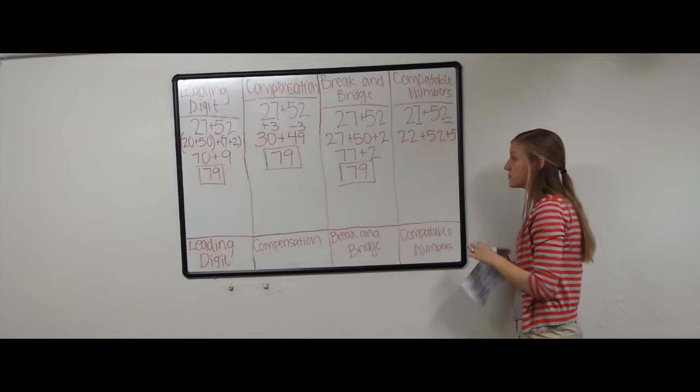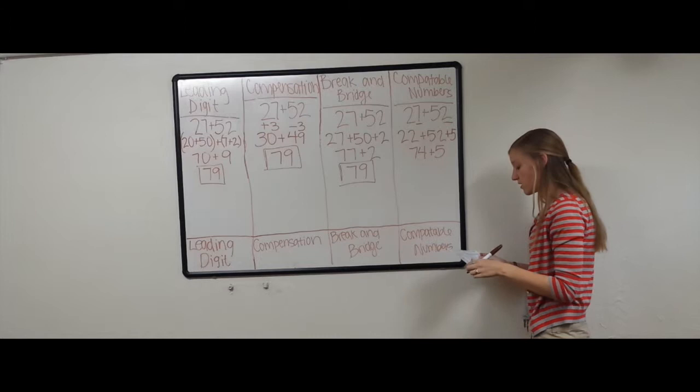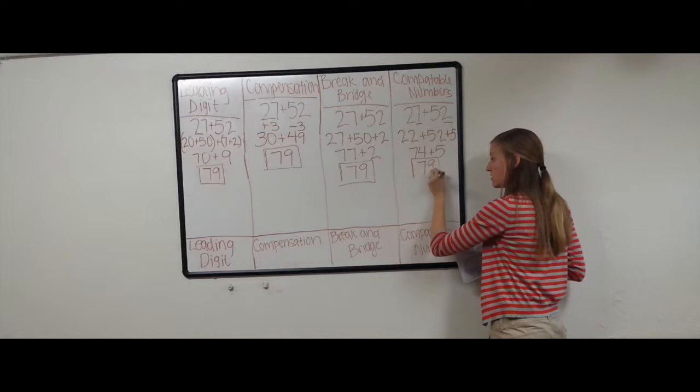So again, we're going to add 2 numbers at a time to make it easier. 22 plus 52 is 74. 74 plus 5 is 79.